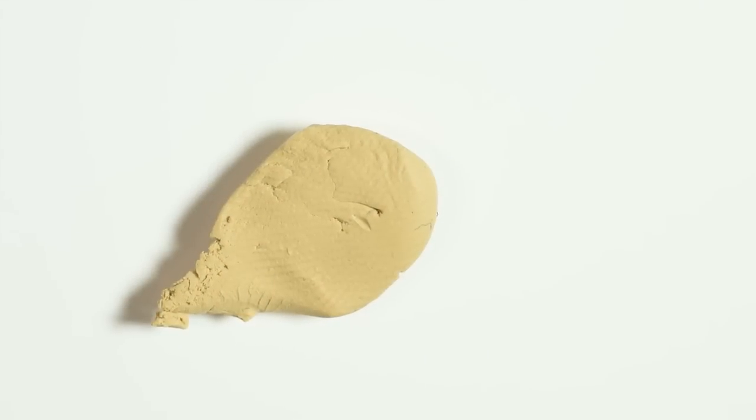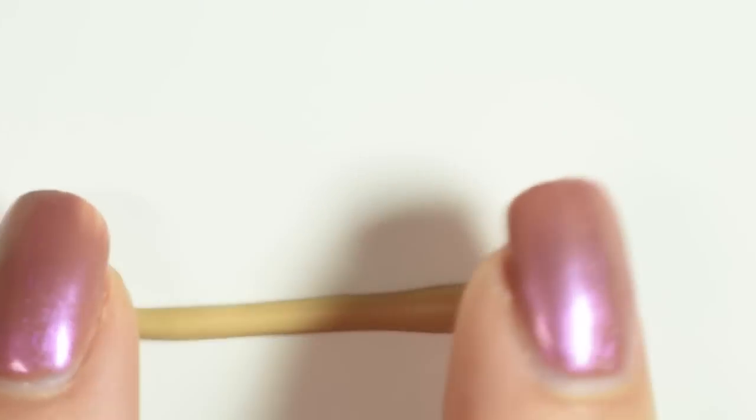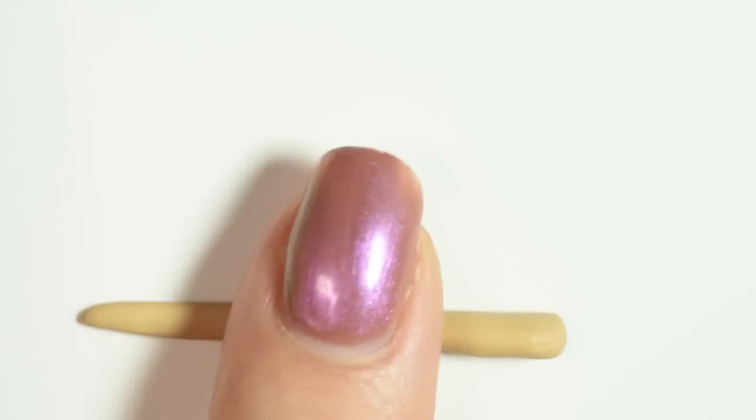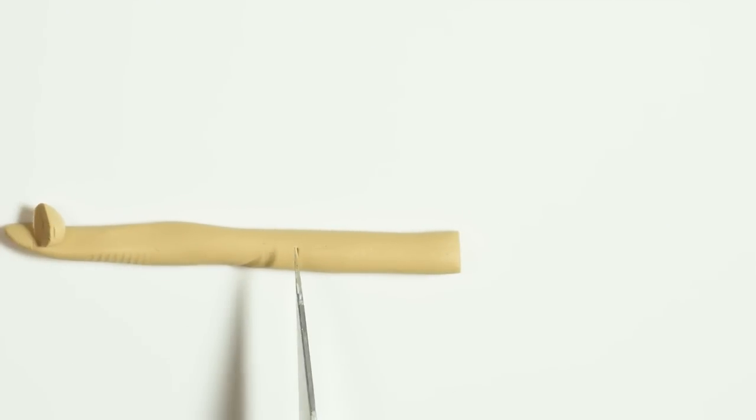To start the ship, get out some tan polymer clay and roll it into a snake. Then take an exacto knife and cut away the excess clay, shaping it into the bottom of the ship.